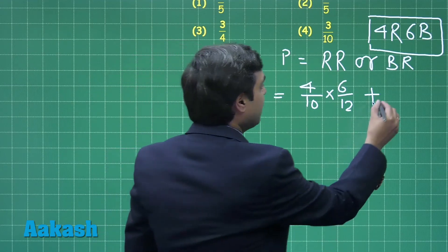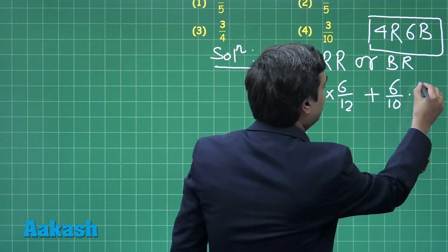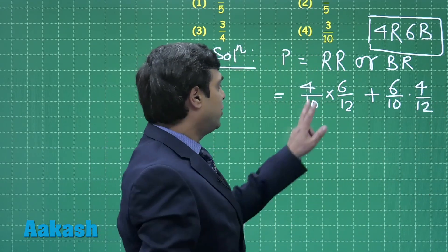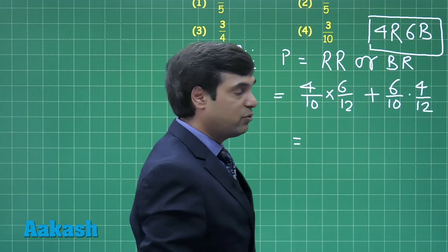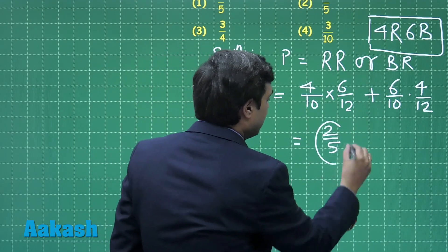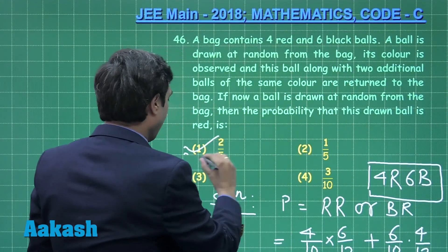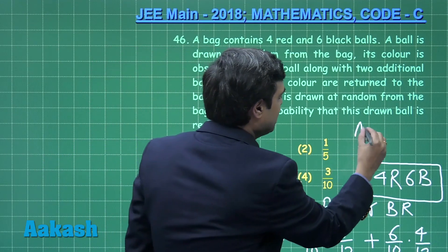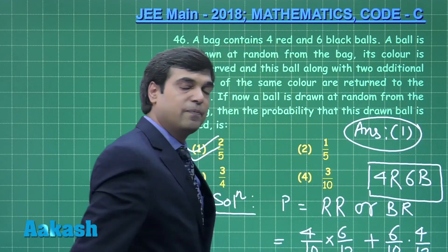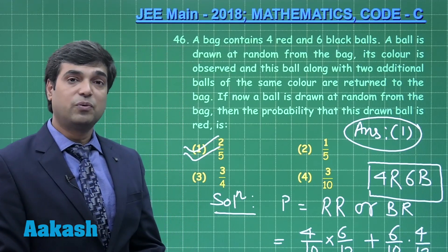In case the first ball comes out black, that probability is 6 by 10, multiplied by 4 by 12. This gives 24 by 120 plus 24 by 120, which is 2 by 5. From the given options, the correct answer is option 1. This is a simple question from probability — let us move to the next question.